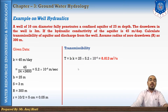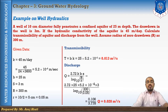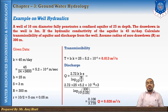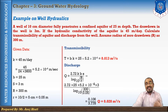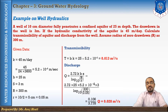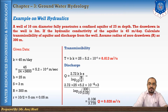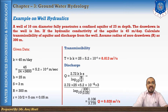To find discharge, use q = 2.72 * k * b * S / log(R/r). We can also use T in place of k*b. Since we have data for a single well, we use log(R/r). Substituting: q = 2.72 × 5.2×10⁻⁴ × 25 × 3 / log(300/0.05). This gives a discharge of q = 0.028 m³/s. This completes the example for the confined aquifer.